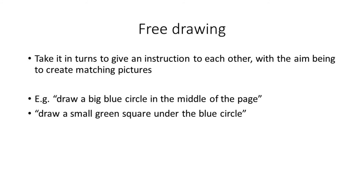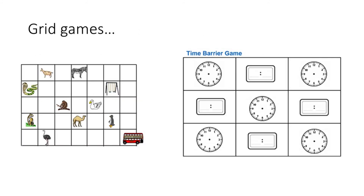Another good barrier game is free drawing, where you take turns to give instructions to each other with the aim of creating matching pictures — using a folder or barrier so you can't see each other. This tends to work well for older children with better language skills, and you can target key vocabulary and concepts such as positional language like above or below, left or right, different shapes, or topic vocabulary. Grid games are squares that can be numbered, where children take turns to listen and give directions — for example, 'draw a snake in box eight.' Harder instructions use coordinates, such as 'draw a snake in square A2,' similar to the game Battleships, and are suitable for older children.